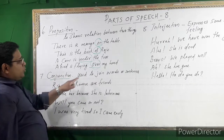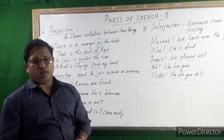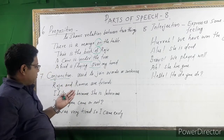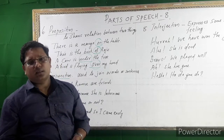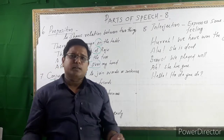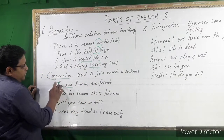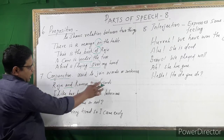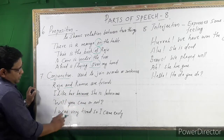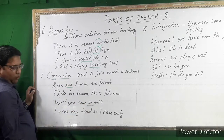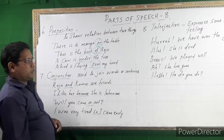Conjunction is a joining word — it joins words or sentences together. Conjunctions include: and, but, or, so, that, because, although, and many more. For example: 'Ramu and Raju are friends.' 'I like her because she is laborious.' 'Will you come or not?' 'I was very tired, so I came here.' These are conjunctions. We will explain more about conjunctions.